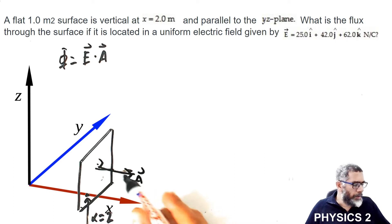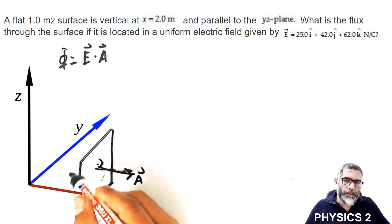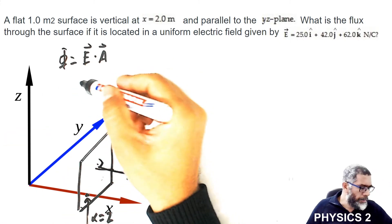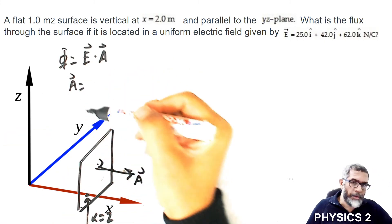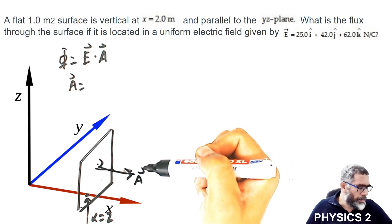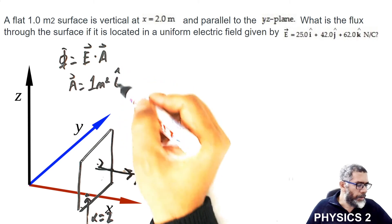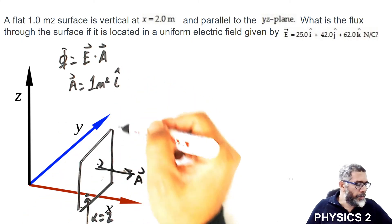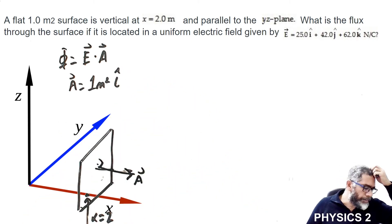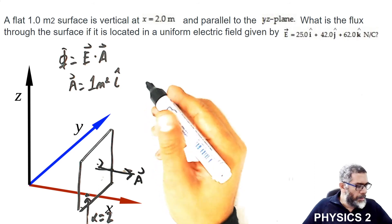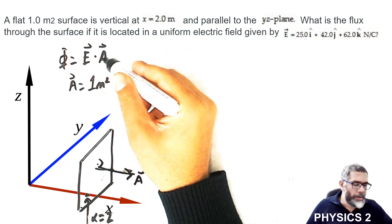The magnitude of the area vector should be the area of the surface itself. So if you want to express that area vector in unit vector notation, it is going to be one meter square multiplied by i, where i is the unit vector in the x direction.